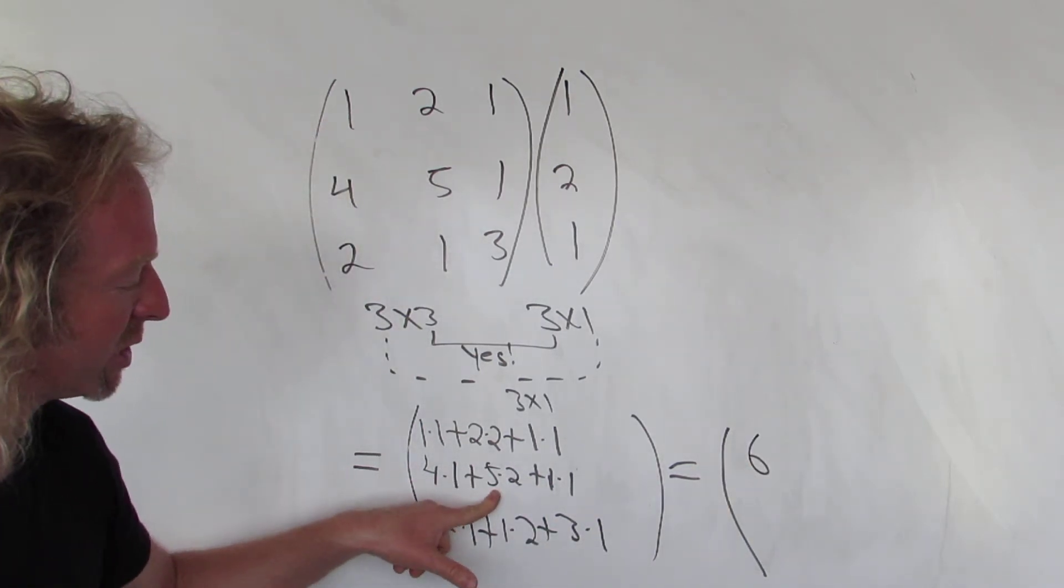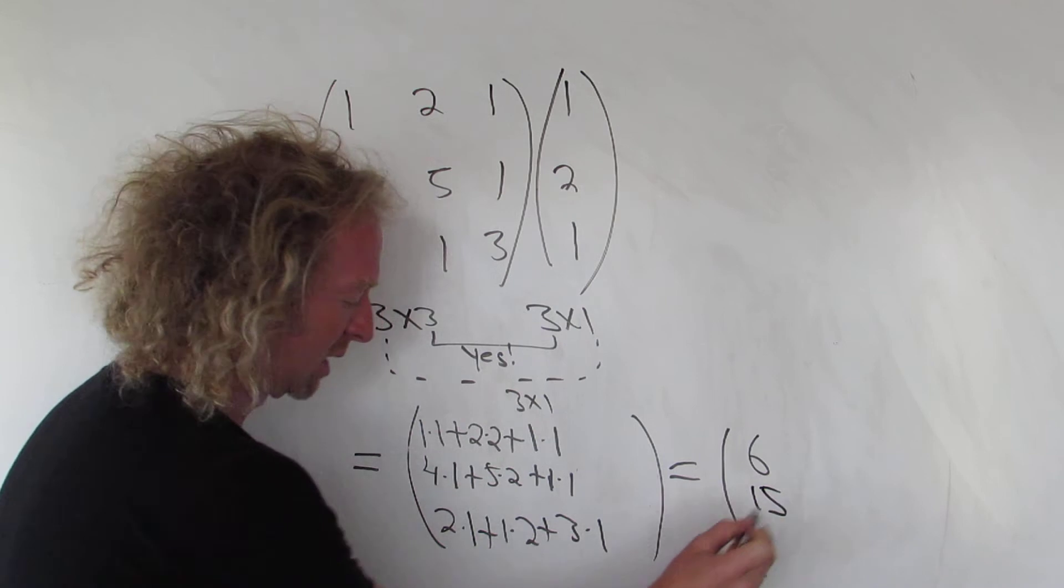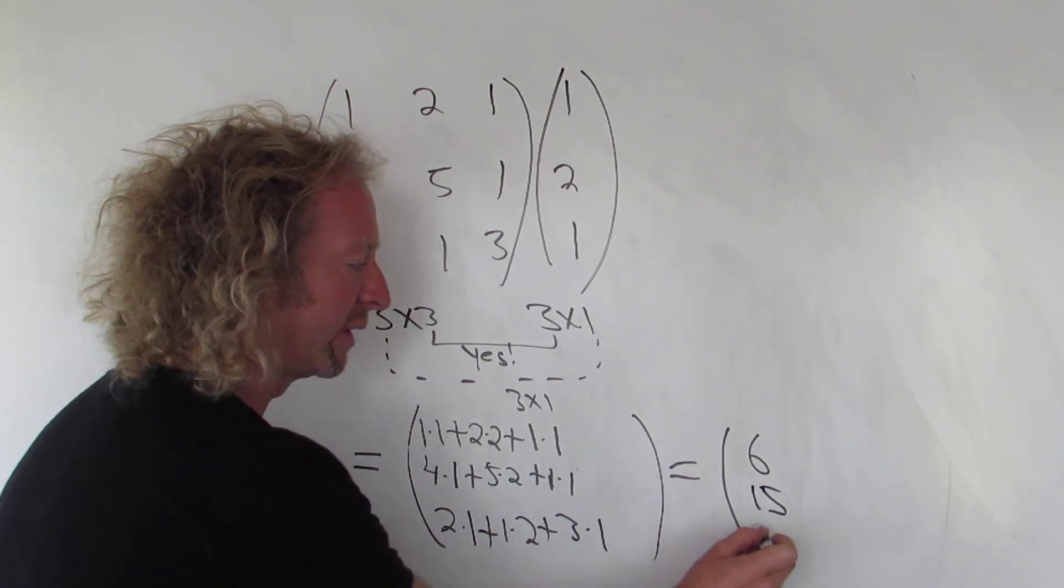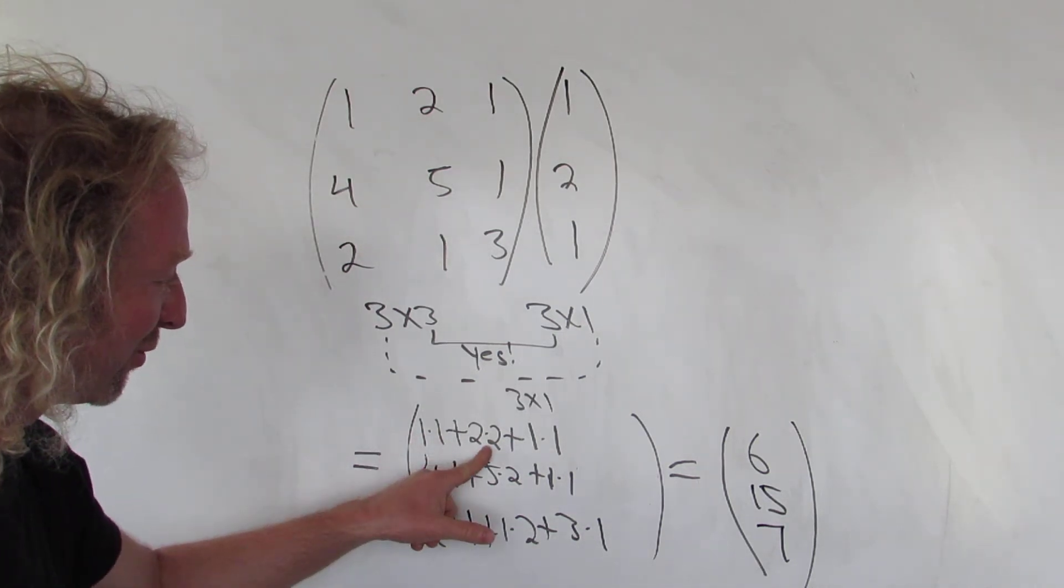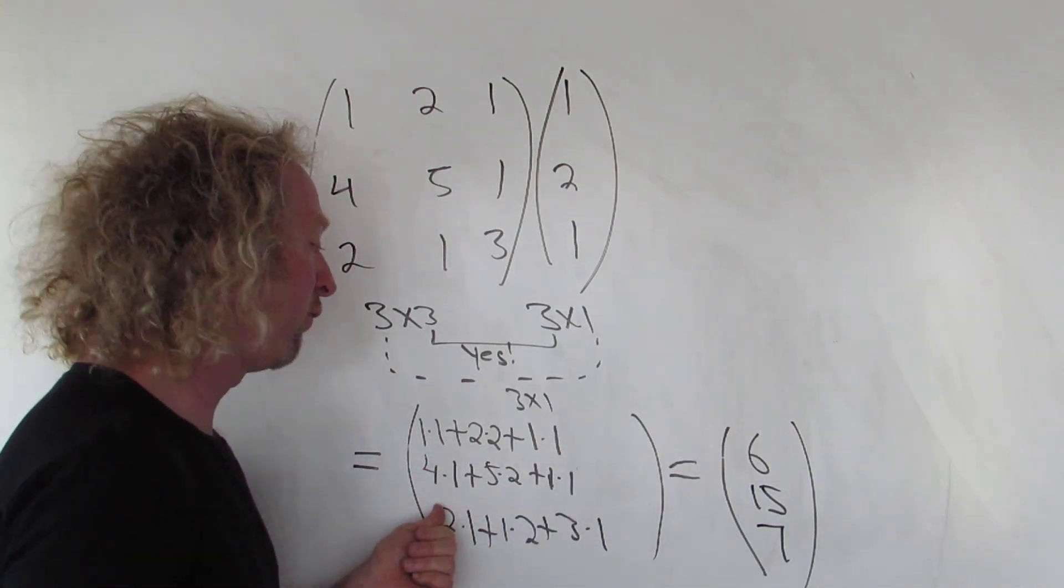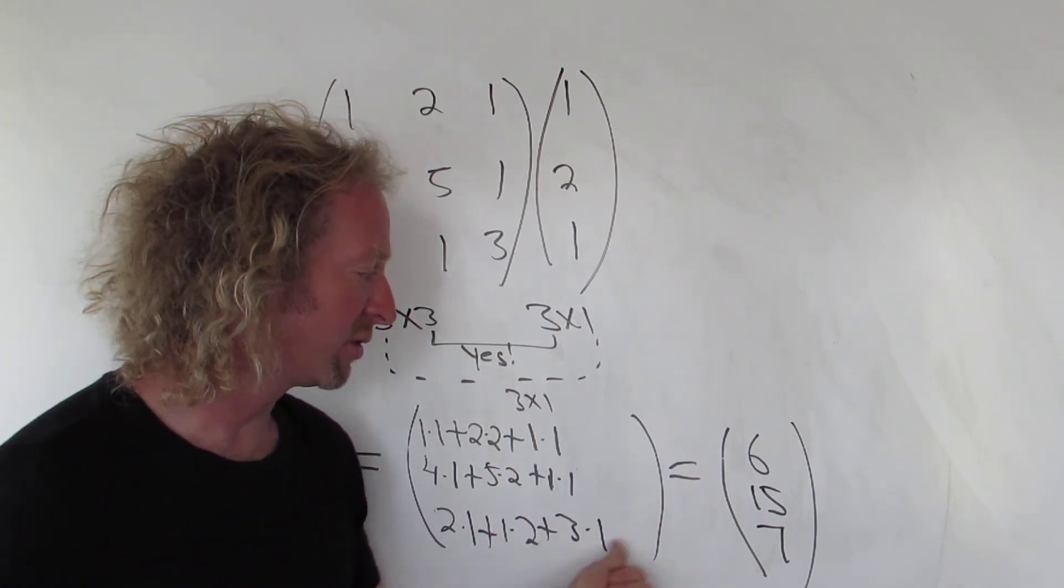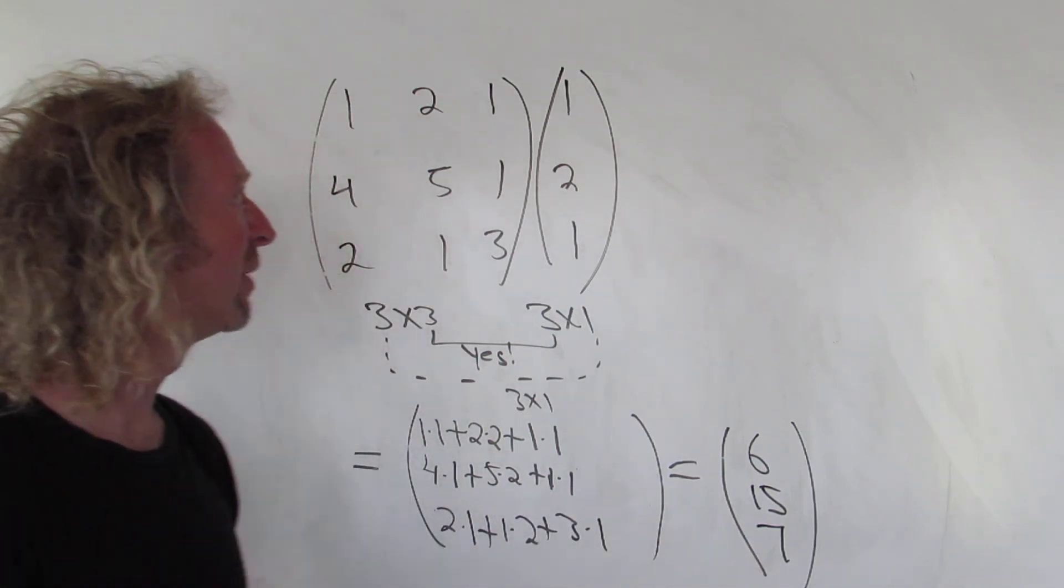4 plus 10 is 14, plus 1 is 15. 2 plus 2 is 4, plus 3 is 7. Let's check that. 1 plus 4 is 5, plus 1 is 6. 4 plus 10 is 14, plus 1 is 15. 2 plus 2 is 4, plus 3 is 7. That's it, I hope that has helped someone out there.